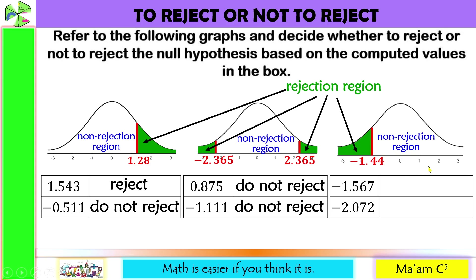The last figure is an example of a left-tailed test. The critical value is negative 1.44. The first computed value, negative 1.567, is less than negative 1.44 and lies in the rejection region — decision is reject. The last value, negative 2.072, is also less than negative 1.44 and lies to the left of the critical value within the rejection region. Decision: reject.